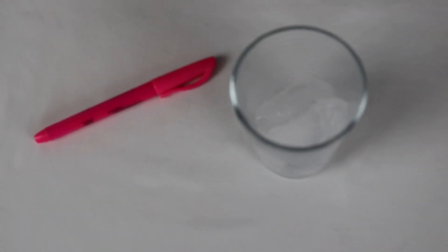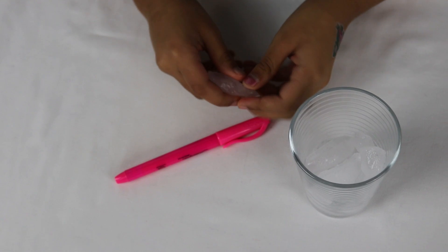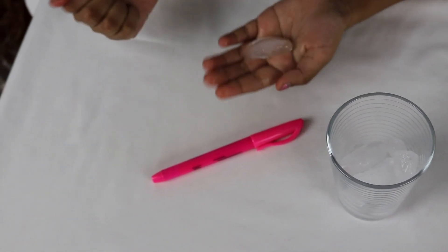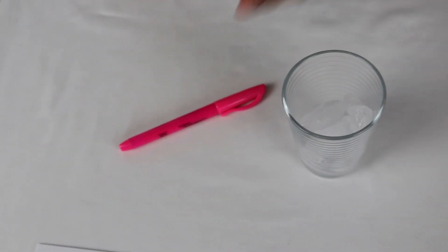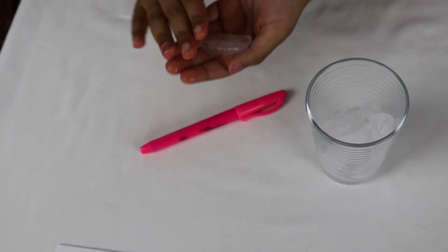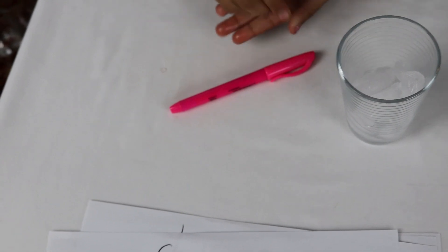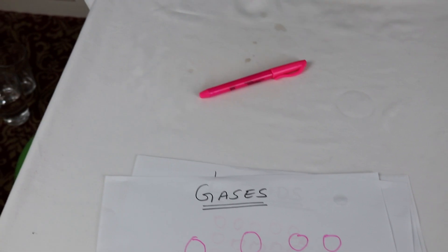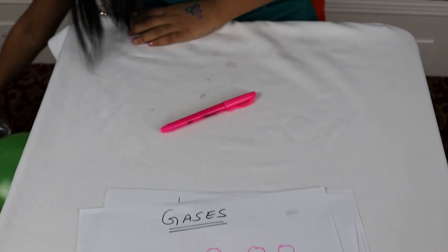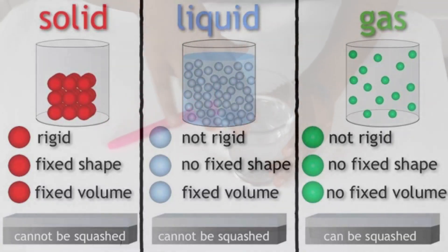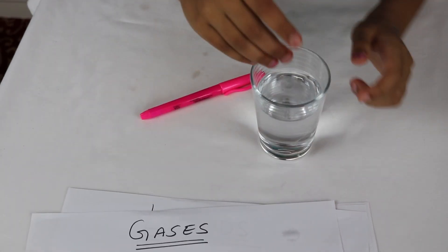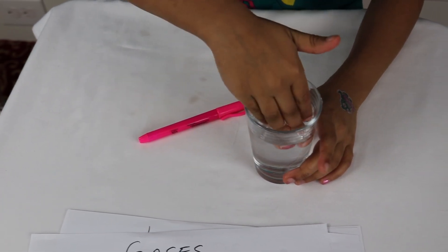Now I'll show you what solids are. This is salt, and this is ice — it's a solid made out of water. What you do is freeze water in the freezer, and the coldness is so cold that the water becomes stiff and still, like this. When it heats up, this ice you see here in this cup...